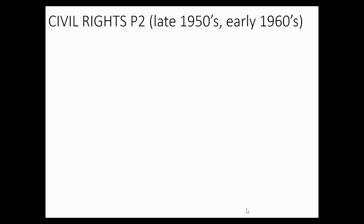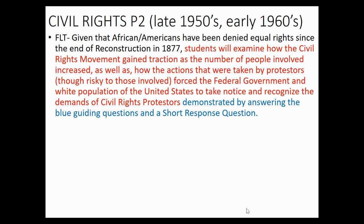Okay, advanced procrastinators, how are you doing today? We are going to do another version of my civil rights lectures online. This is Civil Rights Part 2, late 1950s and early 60s. Our focus learning target today is: given that African Americans have been denied equal rights since the end of Reconstruction in 1877, we're examining how the civil rights movement in the 1950s gained traction, looking at how the number of people involved increased, and how the actions taken by protesters forced the federal government and the white population of the United States to take notice.